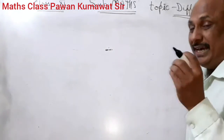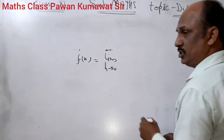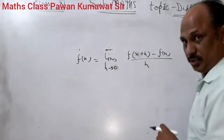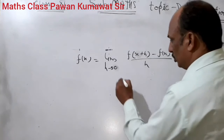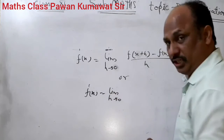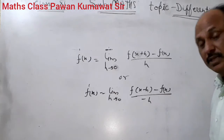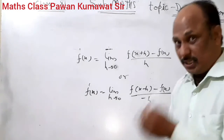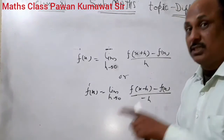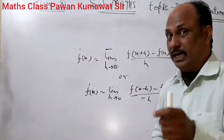For calculating the differentiation of simple functions, we use the formula: f'(x) = limit h→0 [f(x+h) − f(x)] / h. We can also use f'(x) = limit h→0 [f(x−h) − f(x)] / (−h). This method is called differentiation of a given function by first principle.